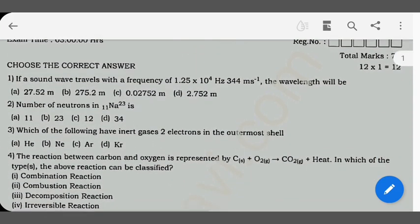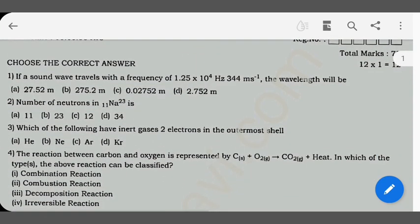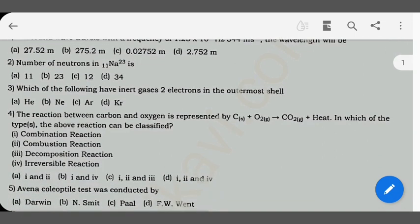First, choose the correct answer. If a sound wave travels with the frequency of 1.25 into 10 to the 4, 344 ms to the -1, the wavelength will be dash. Second one is the number of neutrons. Third one is which of the following have inert gases 2 electrons in the outermost shell.